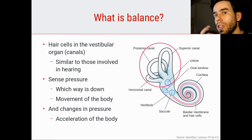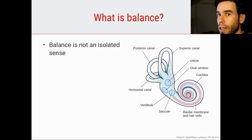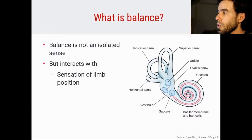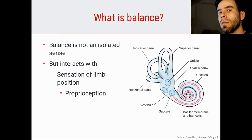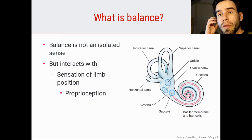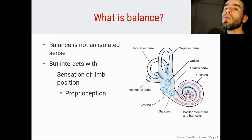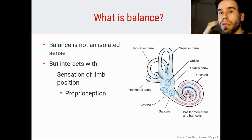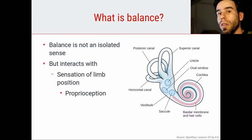Balance is certainly not an isolated sense — it interacts with, for example, the sensation of limb position, known as proprioception. We feel which way is down but also the position of our limbs. For example, if I rotate my head backward, a different direction would register as down in my vestibular organs, but because I know I've bent my head back, I don't feel like the world is rotating. The vestibular signal and the knowledge of my head position together tell me the world has not meaningfully rotated.